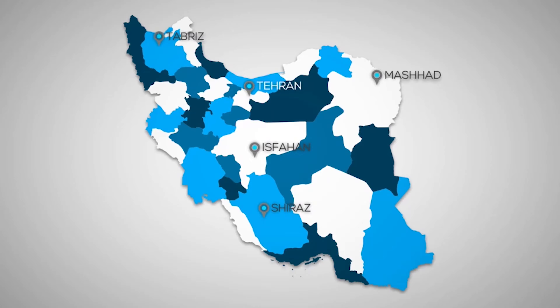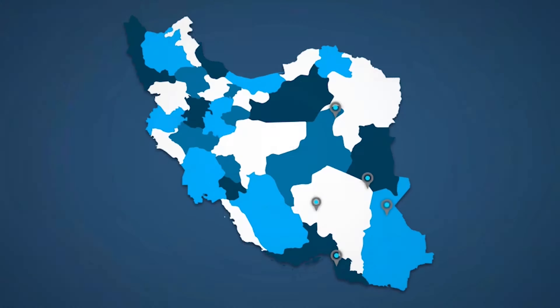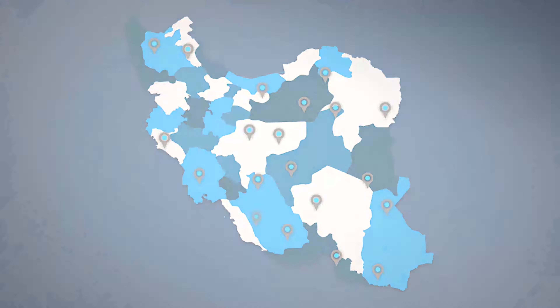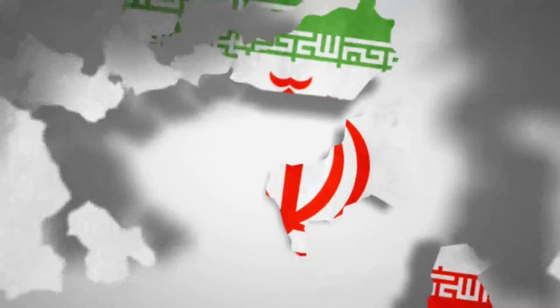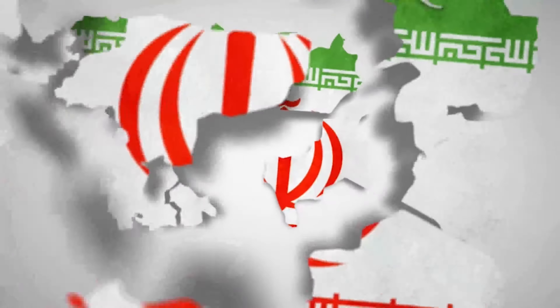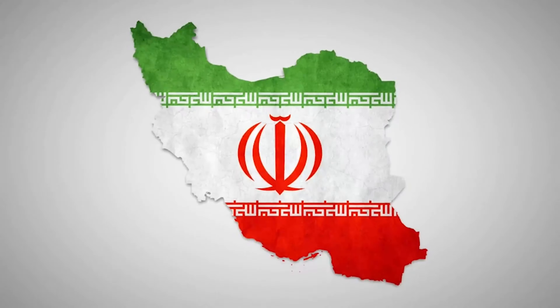Includes map markers for pinpointing cities, locations, outlets, and other areas of interest. Add as many as you need. All of the scenes in this preview video are just usage examples to give you an idea of what's possible with the latest country map from Space Stock Footage.